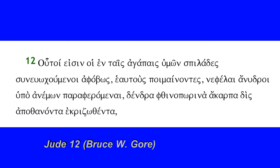We have houtoi — this is the demonstrative pronoun, masculine plural nominative — so 'these' or 'these men are.' Then eisin, from eimi, third person plural present active indicative. And then we have three nouns that function as predicate nominatives that go along with 'these are.'